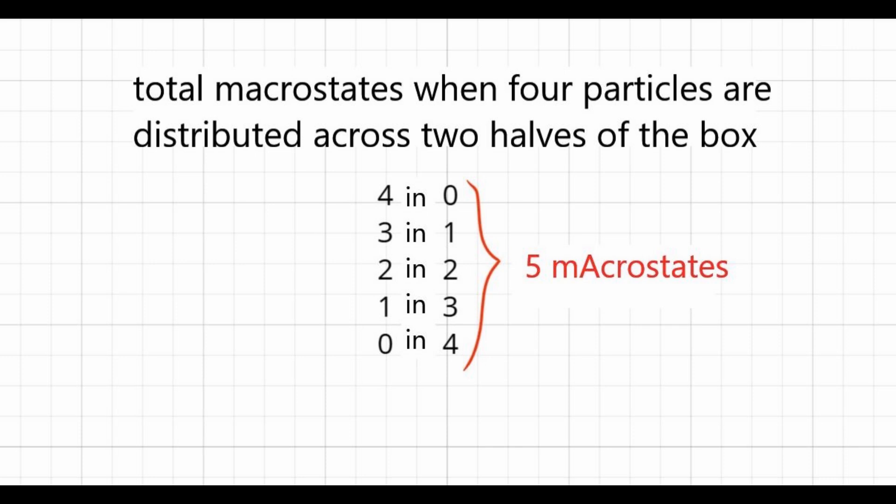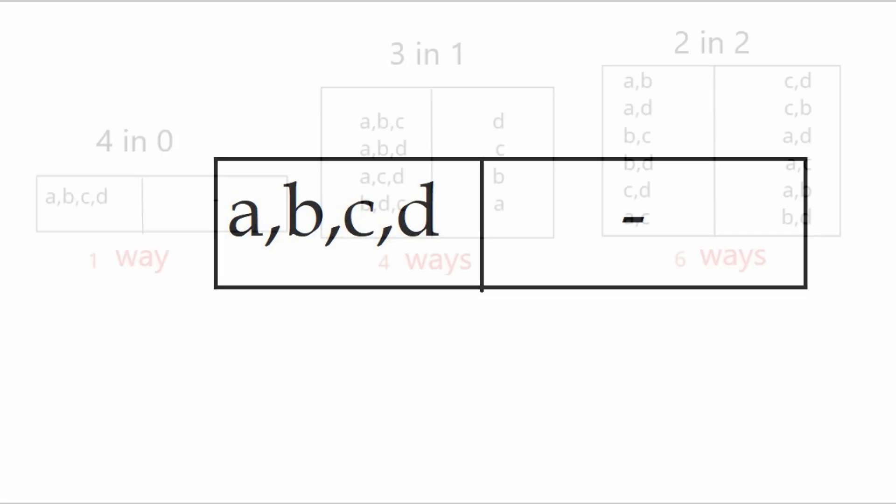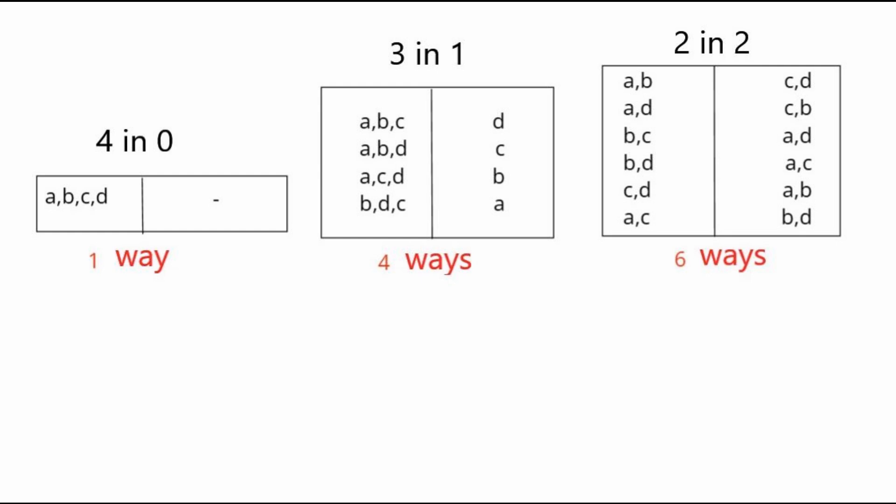Now let's calculate the statistical weight for each macrostate, the number of ways each distribution between the two halves of the box can be realized. Four and zero can be achieved in only one way, three in one in four ways, two in two in six ways.